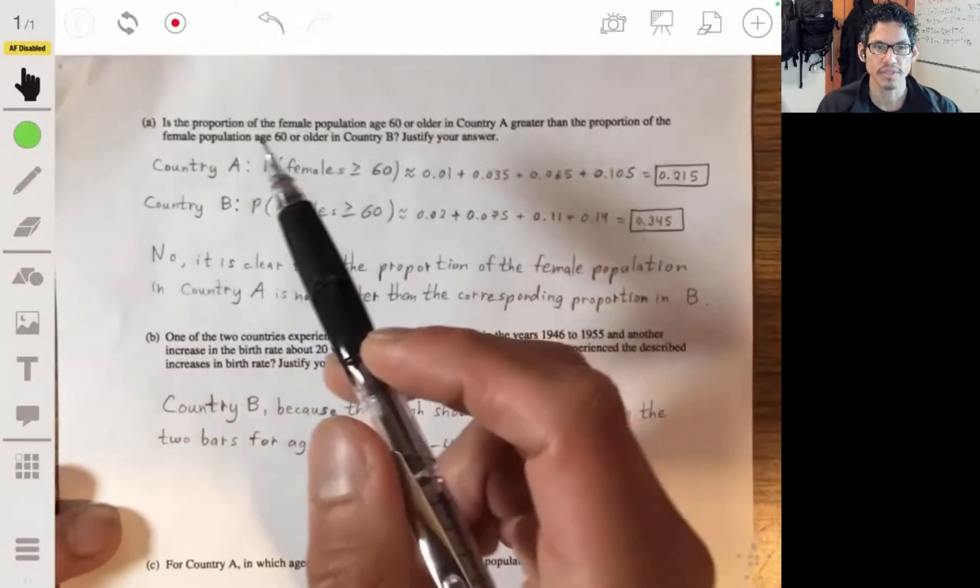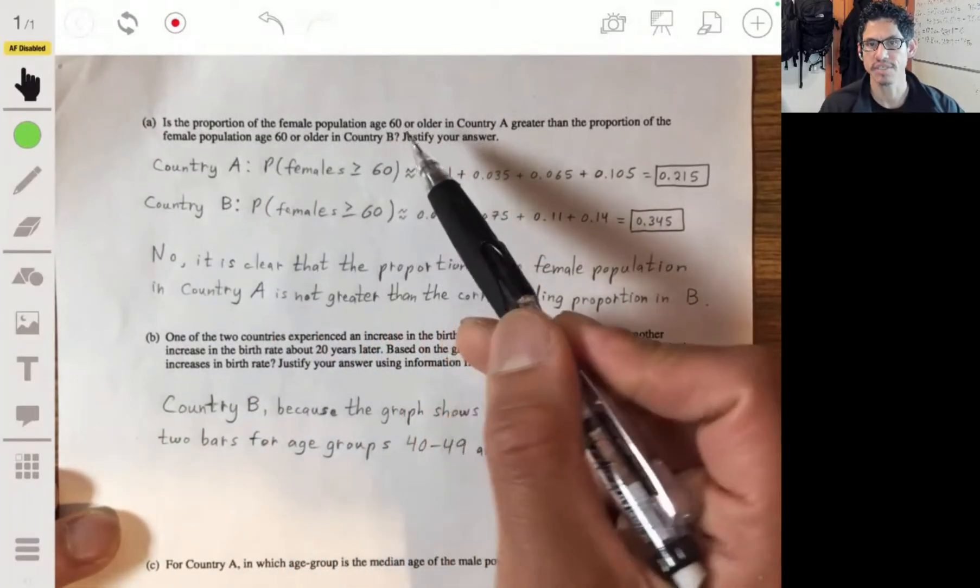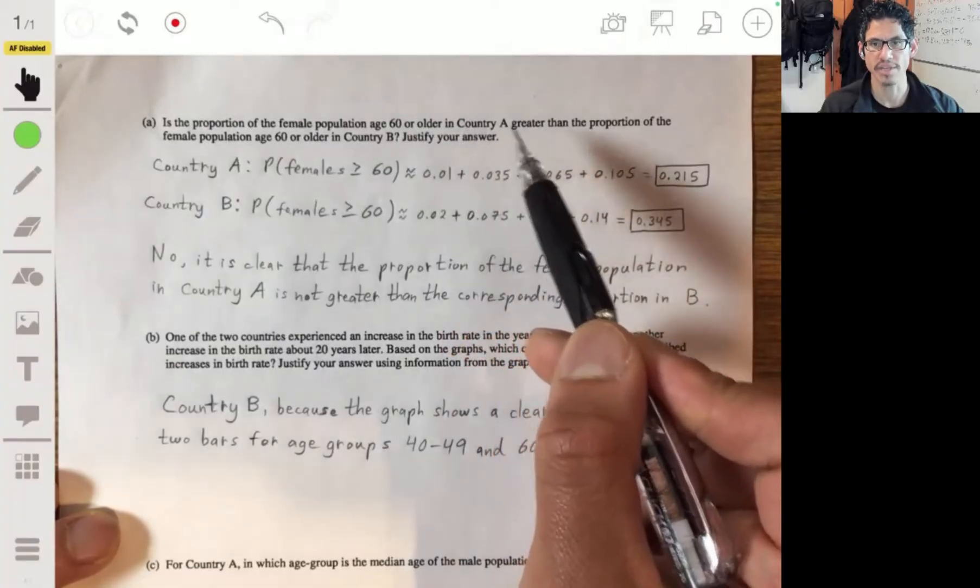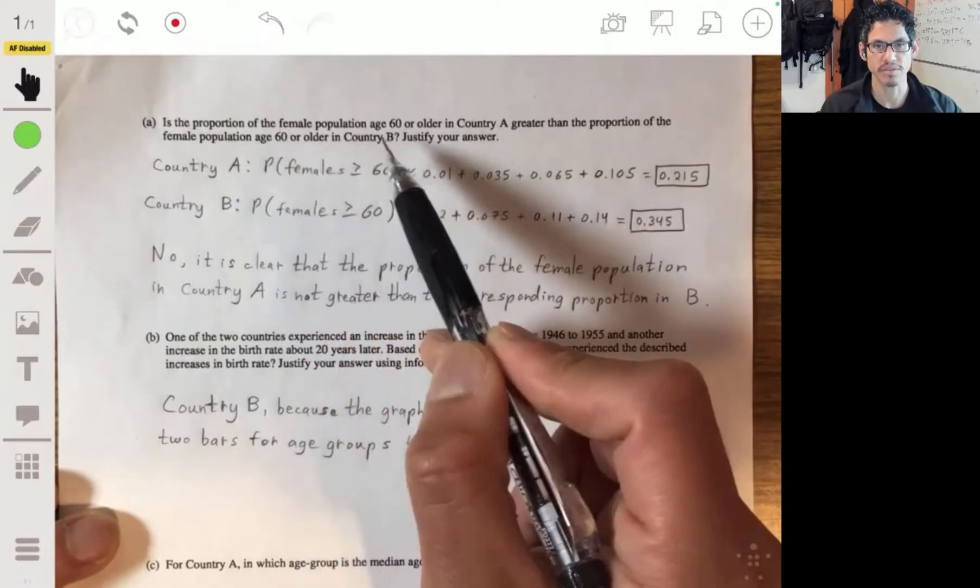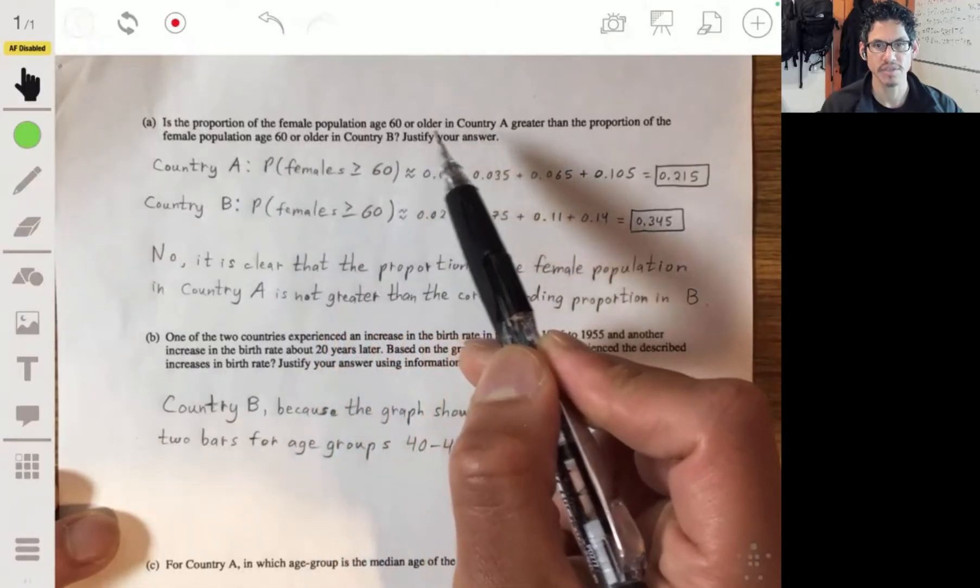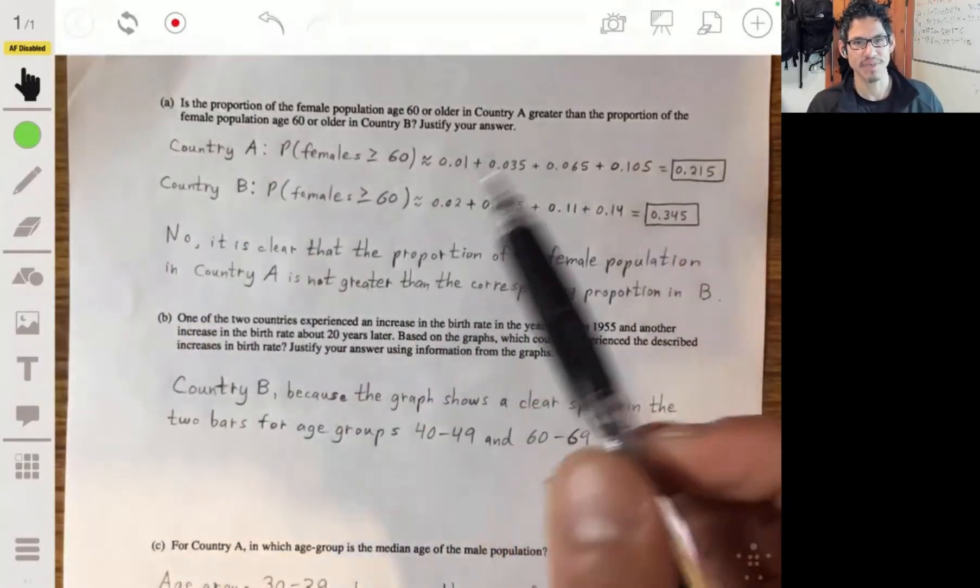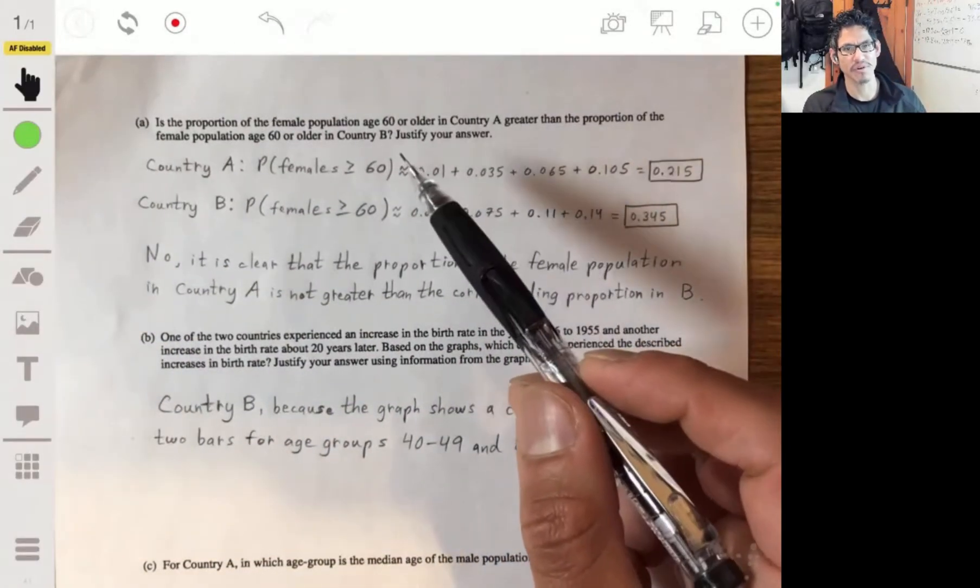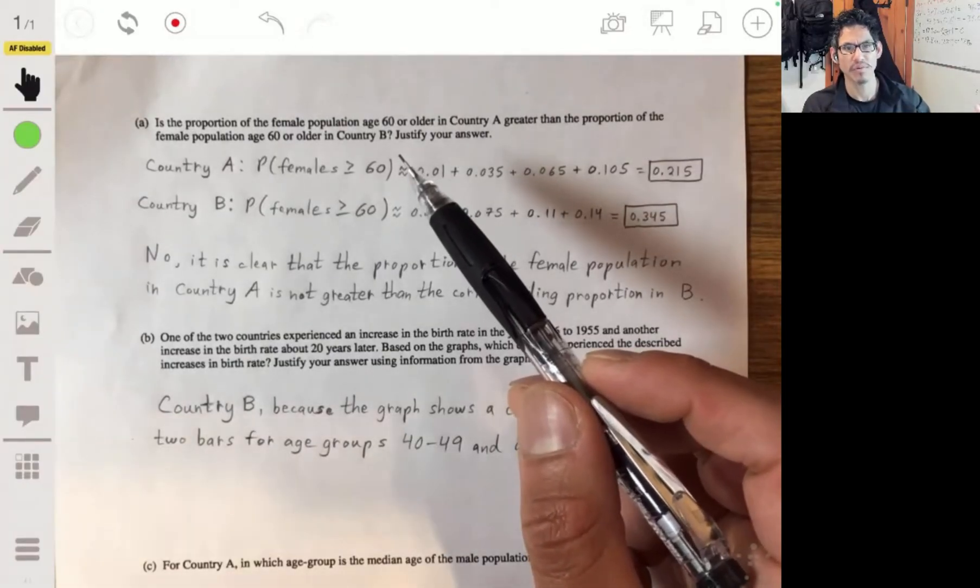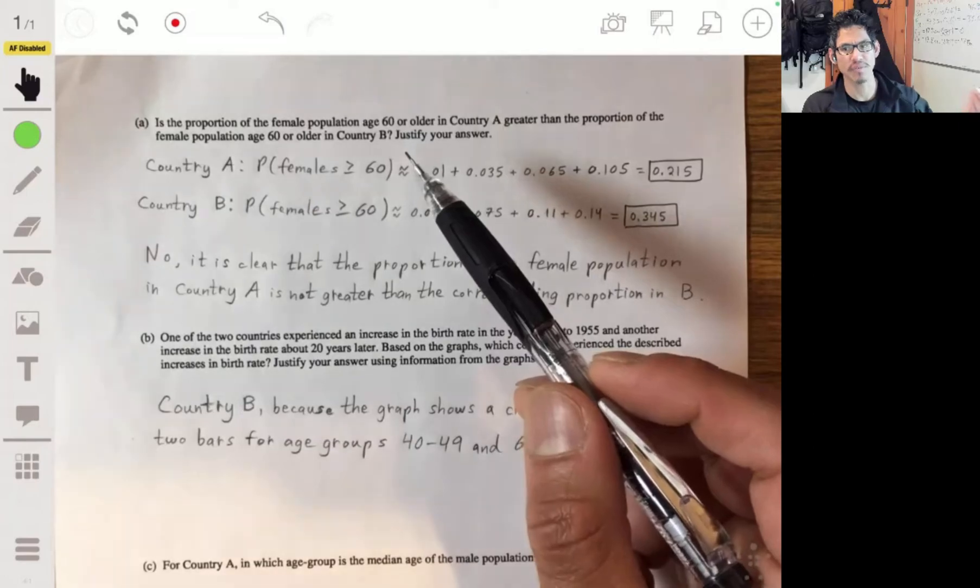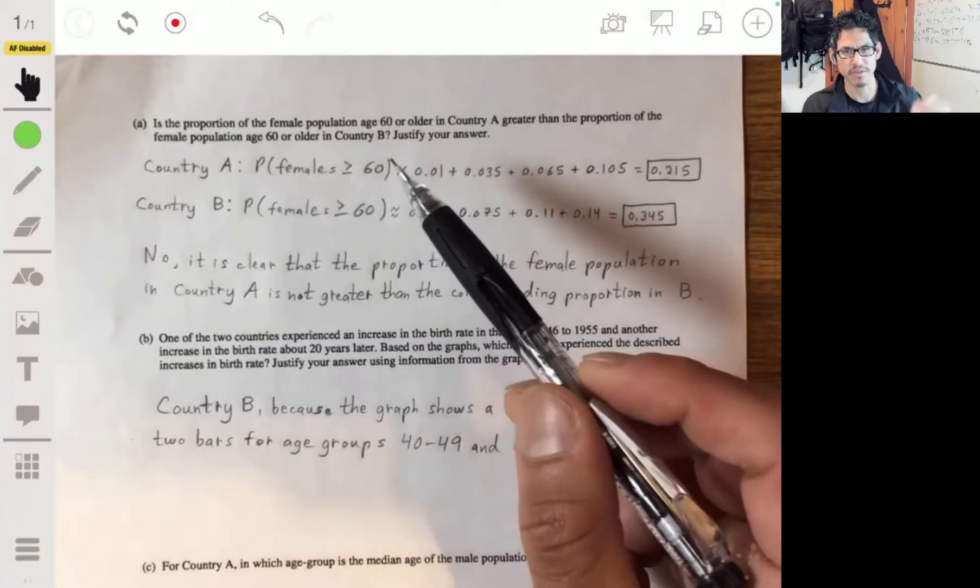It's asking, is the proportion of the female population age 60 or older in country A greater than the proportion of the female population age 60 or older in country B? Justify your answer. Sounds a little confusing, but it's basically just asking if you add up all the proportions for females that are 60 and above, which one's bigger? Is it country A or country B?